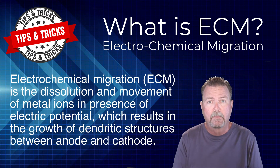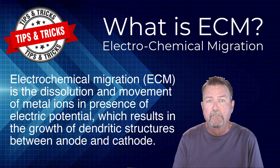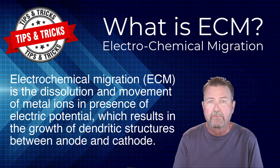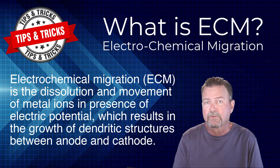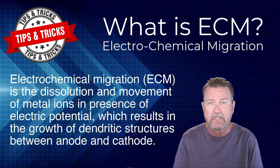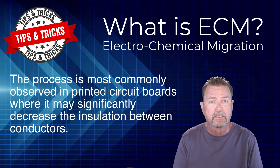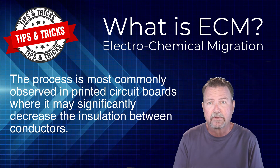Electrochemical migration, or ECM, is the dissolution and movement of metal ions in the presence of an electric potential, which results in the growth of dendritic structures between the anode and the cathode. The process is most commonly observed in printed circuit boards, where it may significantly decrease the insulation between conductors.